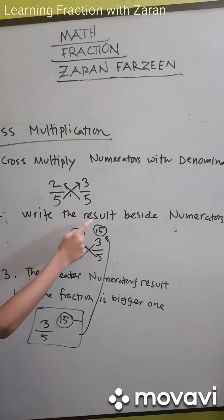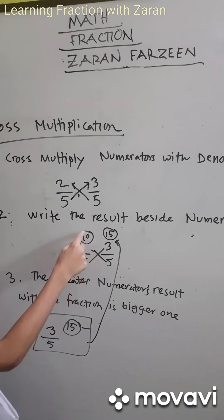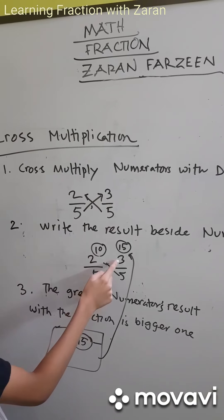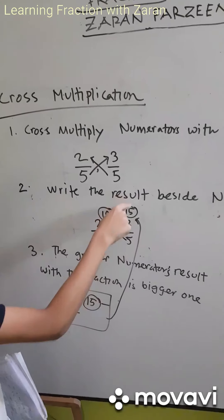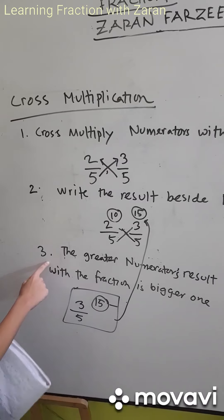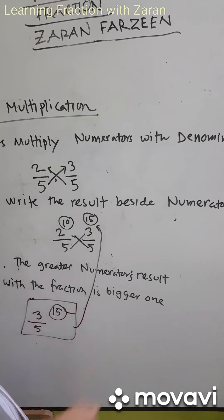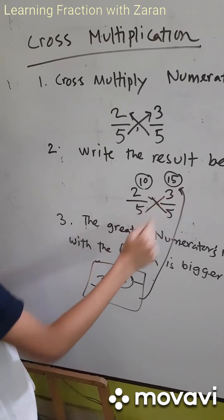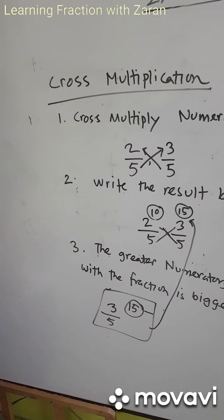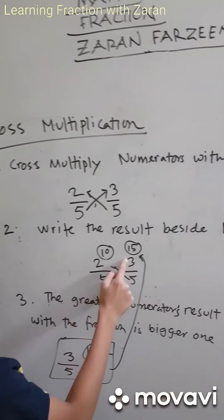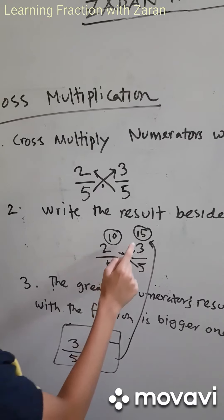The second point is to write the results beside the numerators. When we multiply 2 with 5, we get 10, and we write it beside the numerator 2. When we multiply 3 with 5, the answer is 15, and we write it beside 3, which is the numerator. The greater result indicates the bigger fraction. So 3 by 5 is bigger because 15 is greater than 10.